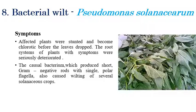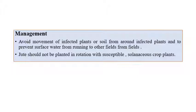Bacterial wilt is caused by Pseudomonas solanacearum. Affected plants are stunted and become chlorotic. Serious deterioration is observed especially in the root regions. For management, movement of infected plants or soil from infected to uninfected areas should be avoided. Jute should not be planted or crop-rotated with susceptible solanaceous crops, as those crops are also highly susceptible to this pathogen.